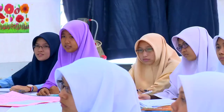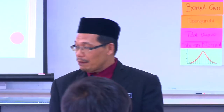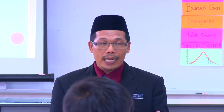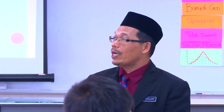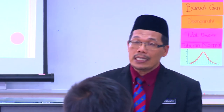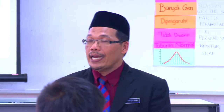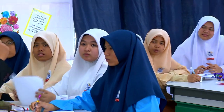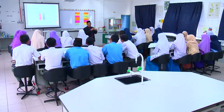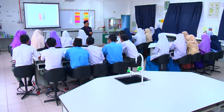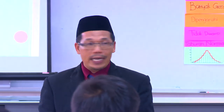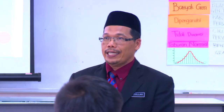Kembar seiras mempunyai kandungan genetik yang sama. Wajah mereka sama kerana mempunyai kandungan genetik yang sama, di mana asalnya mereka berasal daripada satu sperma yang menyenyawa dengan satu ovum sahaja, justeru berkongsi kandungan genetik yang sama. Itulah maksud yang kita nak jelaskan dari segi variasi kembar seiras ini.